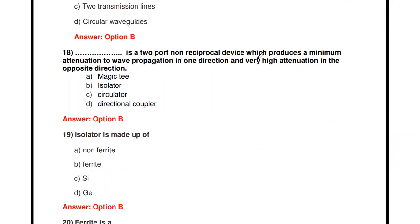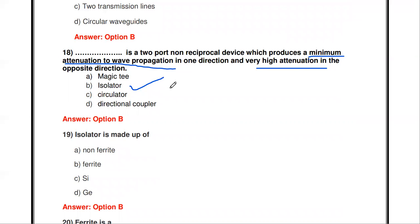The next question: which device is a two-port non-reciprocal device that produces minimum attenuation to a wave propagating in one direction and very high attenuation in the opposite direction — magic T, isolator, circulator, or directional coupler? The answer is isolator. The isolator is a two-port non-reciprocal device producing minimum attenuation in one direction and very high attenuation in the opposite direction.